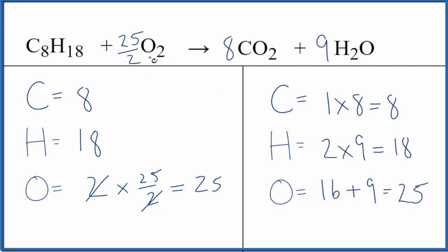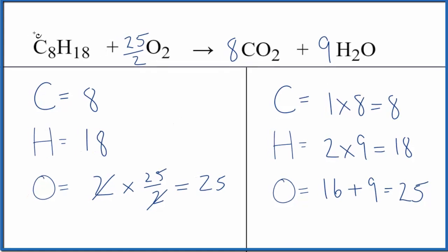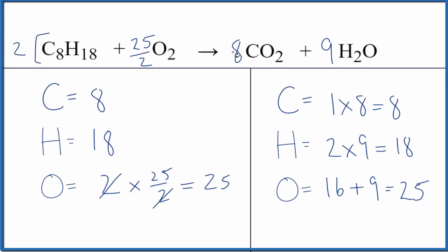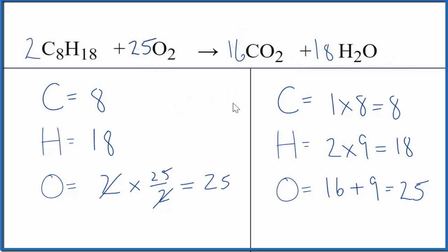What's most important is that we have the correct ratio, and this is the right ratio for C8H18 plus O2. Some teachers want whole numbers, so if we want to do that, we can multiply everything by 2. We'll still have the same ratio but with whole numbers. These are also the correct coefficients for C8H18 plus O2, octane plus oxygen gas.